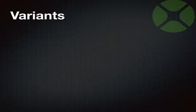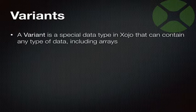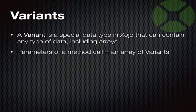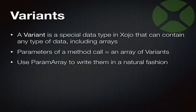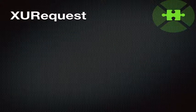For arbitrary types, I went over to the dark side: variants. Variants is something I had studiously avoided — as Bob Keeney put it, 'don't do that, you shouldn't use variants unless you have to.' But in this case I had to. A variant is a special data type in Zojo that can contain any type of data, including arrays — integers, doubles, strings, dates, and arrays of the like. So the parameters of a method call are going to be an array of variants, and I'll use param array so I can write them in a natural fashion.